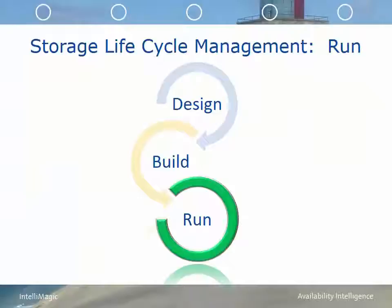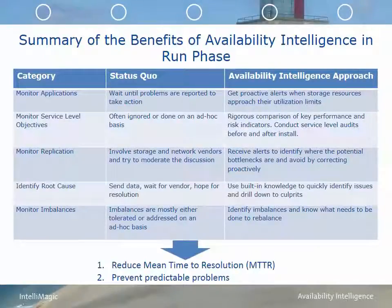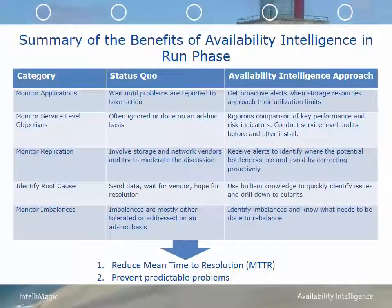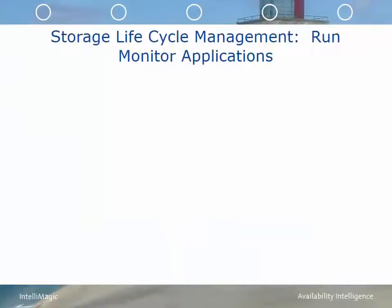In this last phase of the storage management lifecycle, we'll discuss the things that should be done during the run phase. I'm going to summarize the benefits of including availability intelligence in the run phase and then go through a few examples in more detail. The ultimate goal of these activities is to reduce the mean time to resolution and prevent predictable problems. You do this by monitoring applications, service levels, and replication, identifying root cause, and monitoring imbalances on a regular proactive basis using a solution that takes into account your workload and the specific capabilities of your hardware.